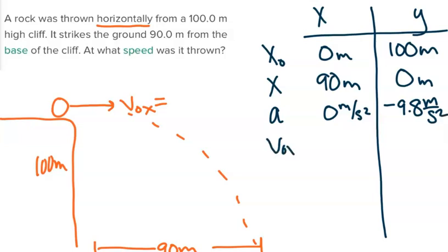Our initial x velocity is what we are solving for, so that is unknown. But our initial y velocity is going to be 0 meters per second, again because the rock was said to have been thrown horizontally. We don't know either of our x or y final velocities and we don't know time, but we do know that time is going to be the same for both the x and the y direction.